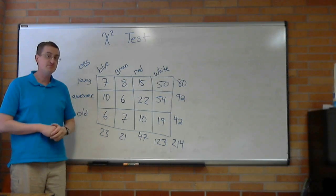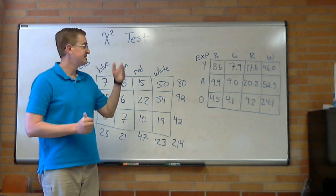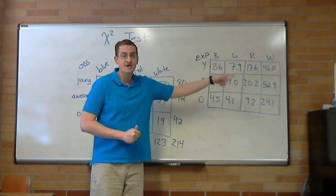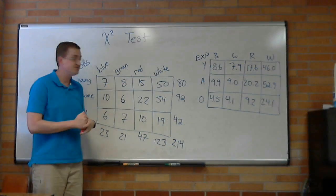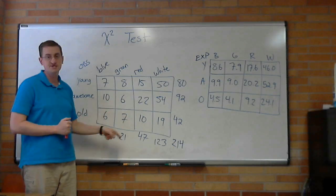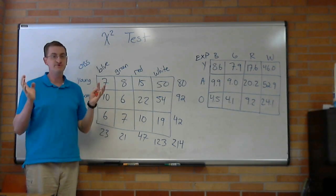Our first step would be to find the expected values. Like this, we've got our different colors, we've got our different ages, there's all our expected values. My dad is actually a used car salesman, he says green is the hardest color to sell, if you're curious.